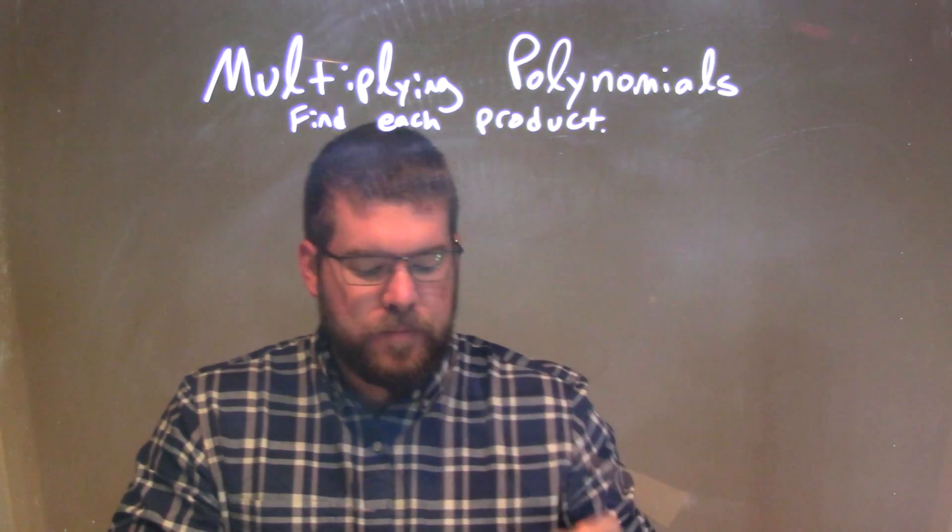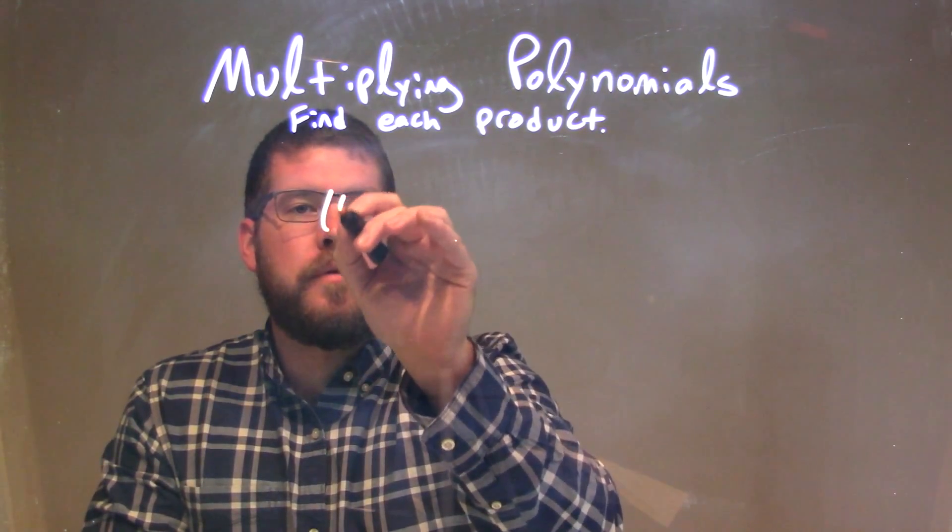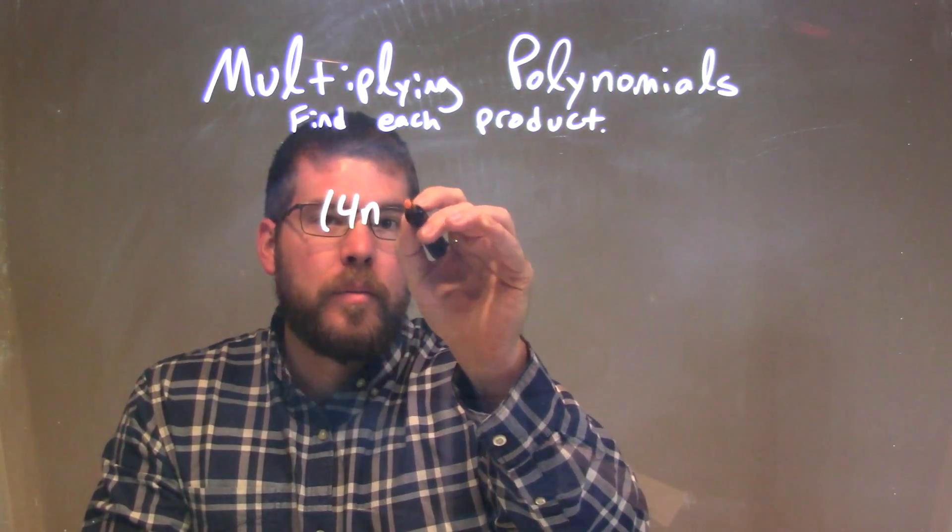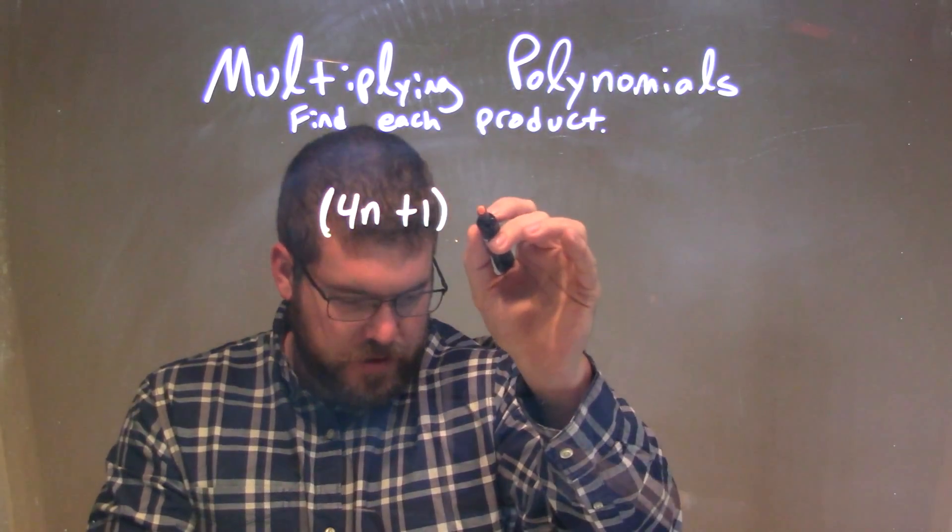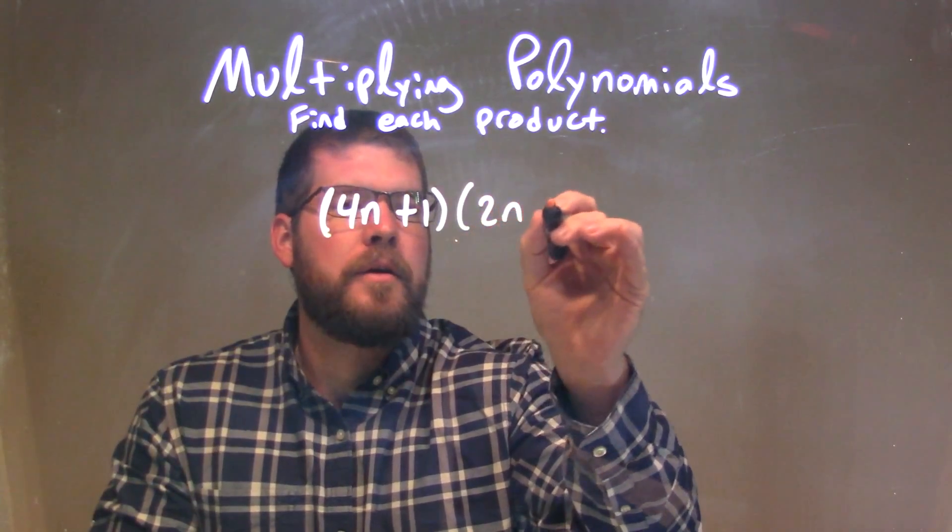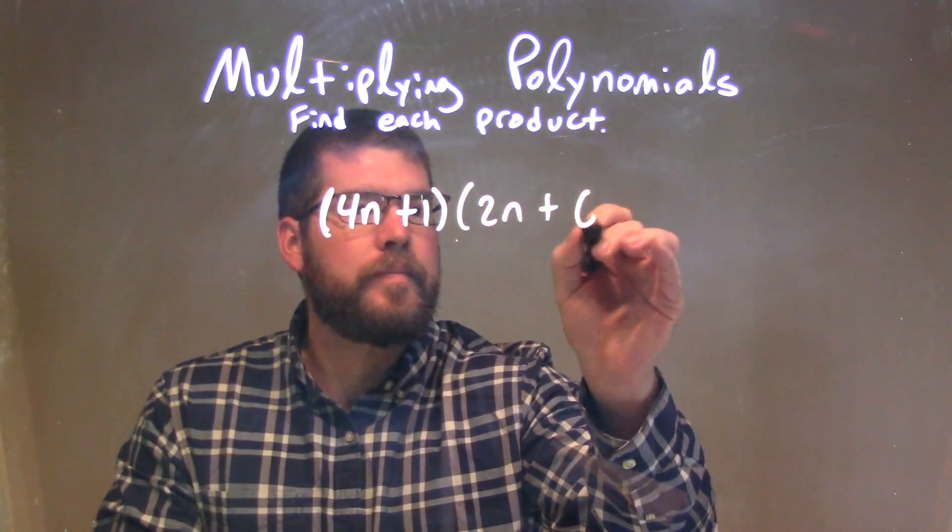So if I was given this problem, 4n plus 1 times 2n plus 6.